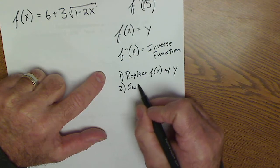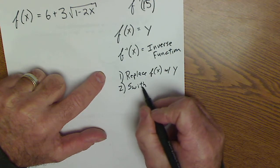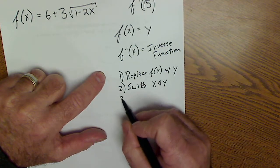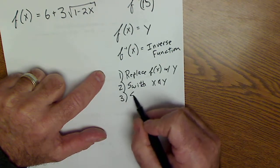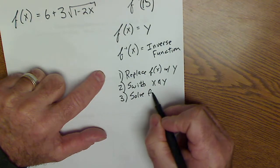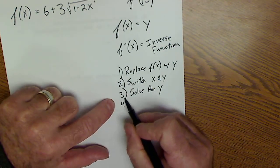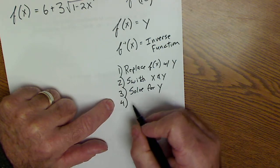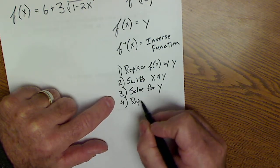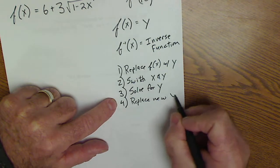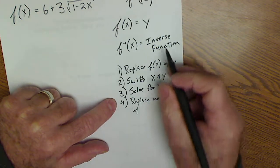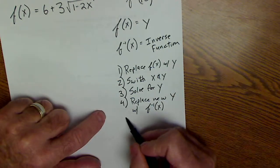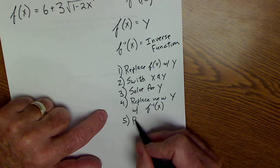Here is the five-step process. Step 1: replace f(x) with y. Step 2: switch your x's and y's. Step 3: solve for y. Step 4: replace your new y with inverse function notation, f⁻¹(x). Step 5: plug in the value if you're given one.